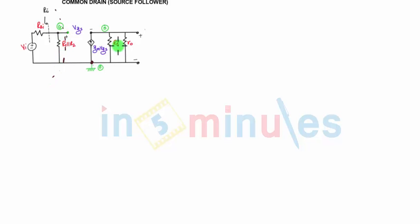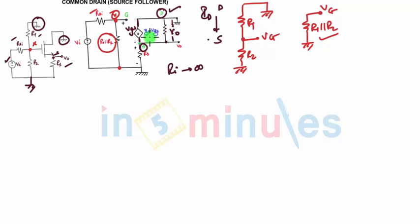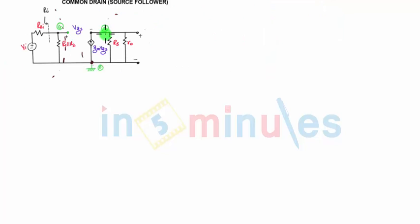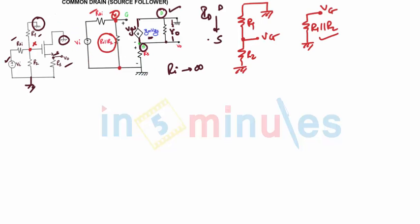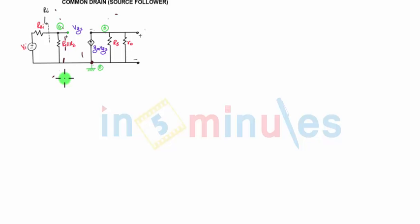This side we are not changing. Whatever is done is on the source and drain side. You can see here, in this case, GMVGS is flowing from drain to source. In this case also, the current is flowing from drain to source. RS is between source and ground. Here also, RS is between source and ground.